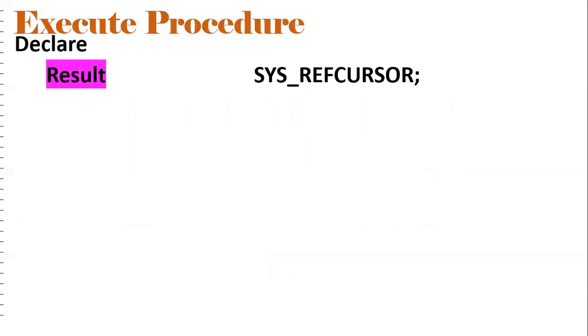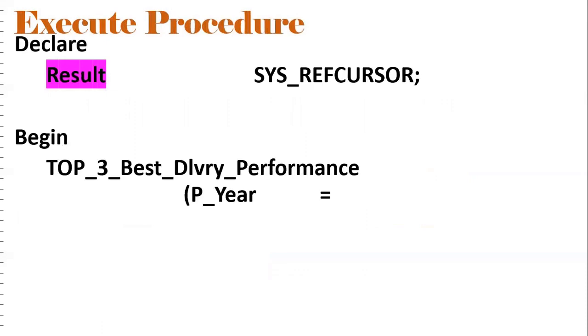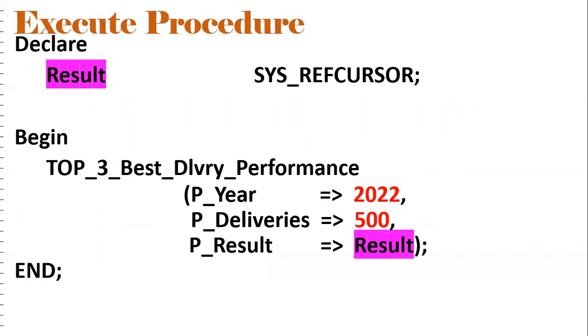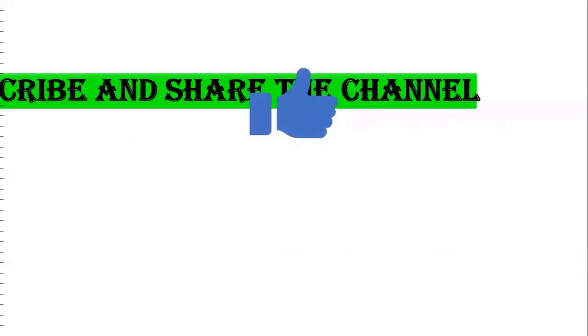To execute this using an anonymous block: I am passing the year 2022, wanting the top three best performers where minimum deliveries should be 500. The result will be shown via the result variable. If you like the content, please subscribe and share the channel.